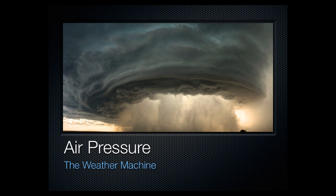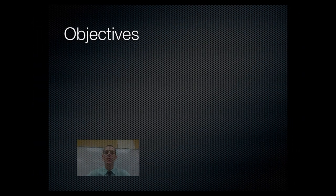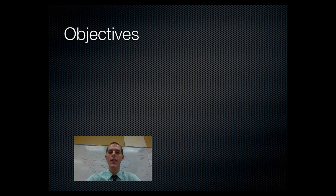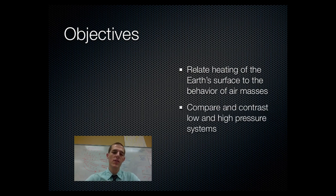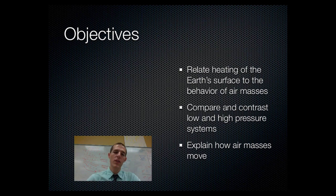Hey everybody, welcome to another edition of the Lab 207 webcast. My name is Mr. Kai and I'll be hanging out with you today. The topic of discussion for our little lesson is air pressure, which we're calling the weather machine, because throughout class for the rest of the week we're going to be taking this idea of air pressure and tying it to weather. I've got a couple of objectives for you — things you need to know or be able to do by the end of class. First, relate heating of the earth's surface to the behavior of air masses. Second, compare and contrast low and high pressure systems, and finally, explain how air masses move. So get out your pen and paper or your Evernote and let's start taking some notes.